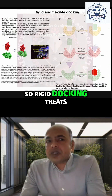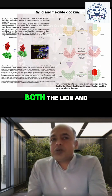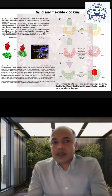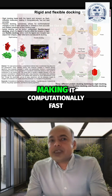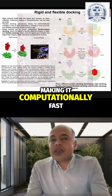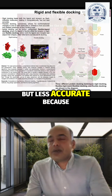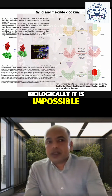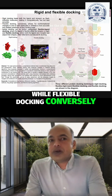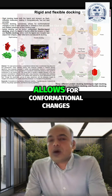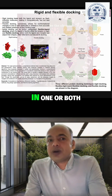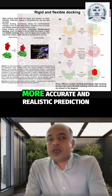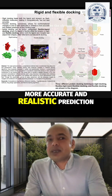Rigid docking treats both the ligand and the receptor as fixed, inflexible molecules, making it computationally fast but less accurate, because biologically such rigidity is impossible. Flexible docking, conversely, allows for conformational changes in one or both molecules to achieve a more accurate and realistic prediction.